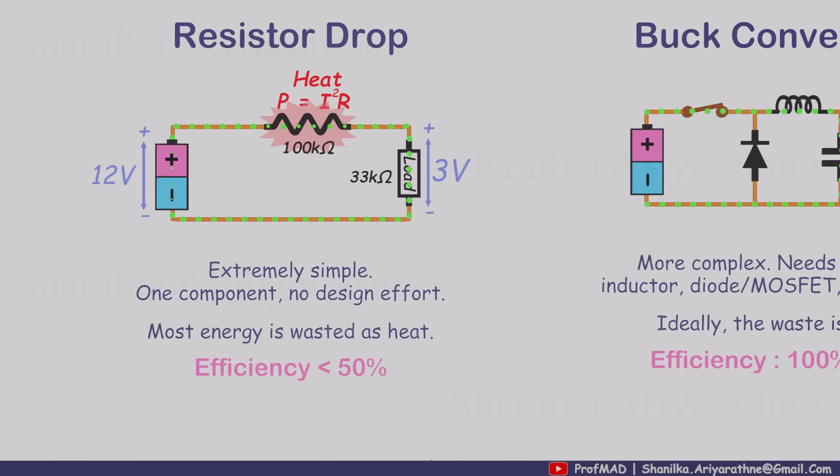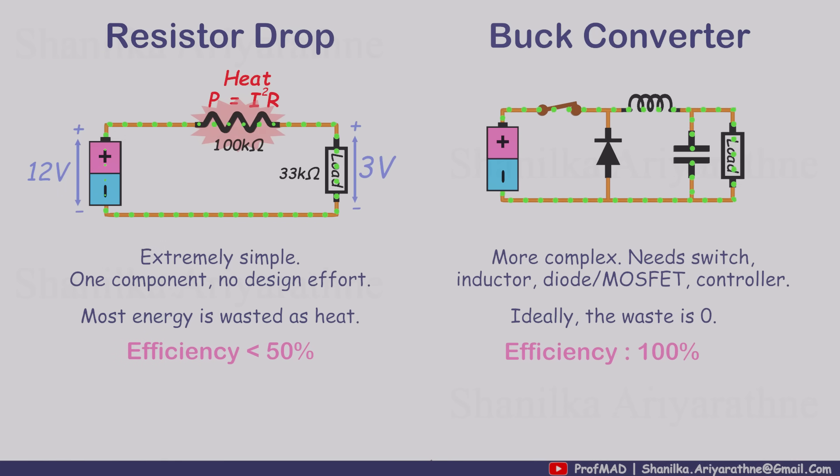A buck converter, on the other hand, can theoretically reach 100% efficiency. In real life it's a bit lower, but still far better than a resistor divider. That's why buck converters are the go-to choice in battery-powered devices where every bit of energy counts.